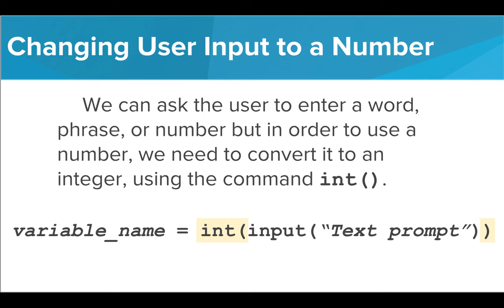It's very simple to change a user's input to be read as a number by using the command int. All we need to do is surround our entire input command by the term int and place parentheses around it. You'll notice two close parentheses at the end of the phrase. This is because we open two parentheses throughout our phrase, so we need to make sure to close both of them or Tracy will respond with an error.